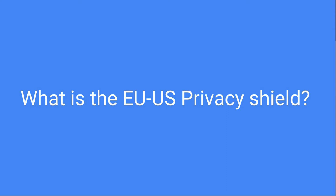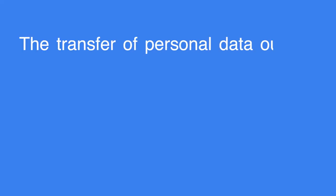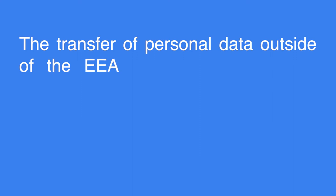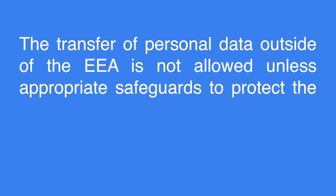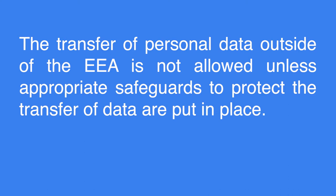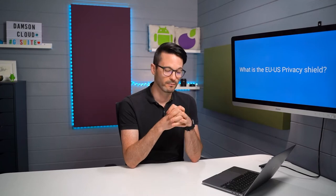So, what is the EU-US Privacy Shield? According to GDPR, the transfer of personal data outside of the EEA — the European Economic Area — is not allowed unless appropriate safeguards and protections are put in place. The most popular mechanism to achieve this up until July was the EU-US Privacy Shield. This framework replaced the International Safe Harbour Principles, which was invalidated by Schrems 1 — the first case that Max Schrems brought.